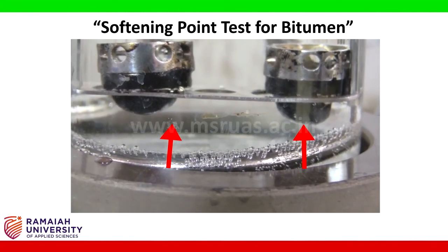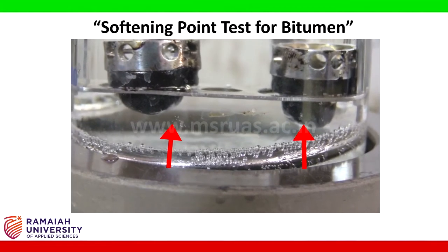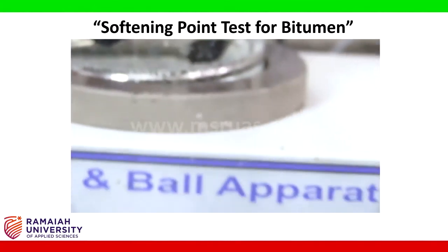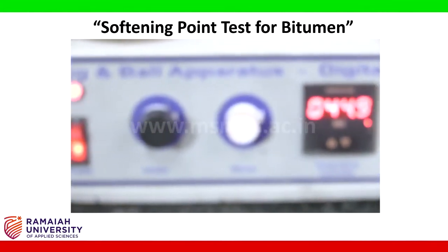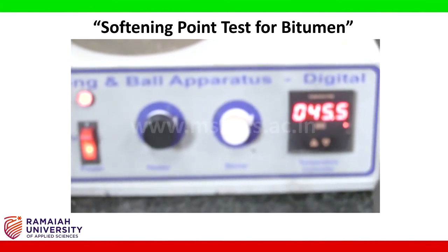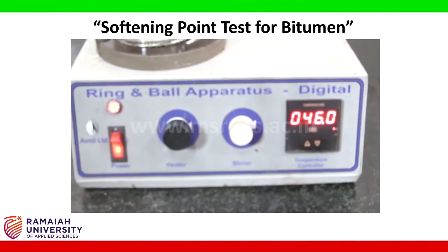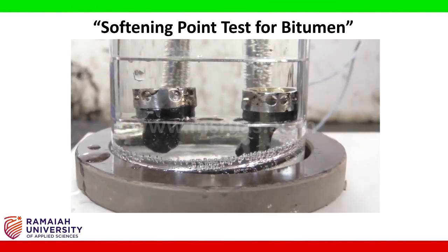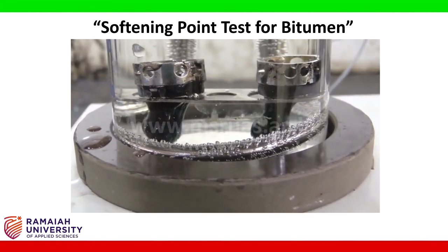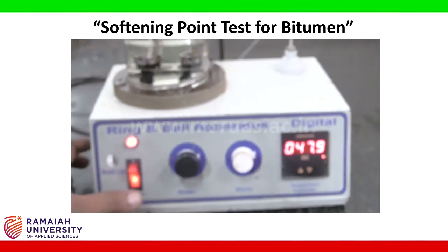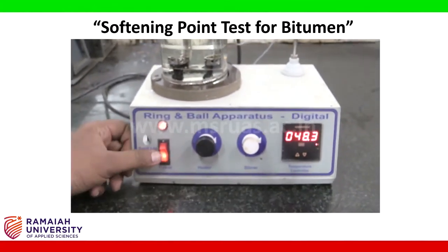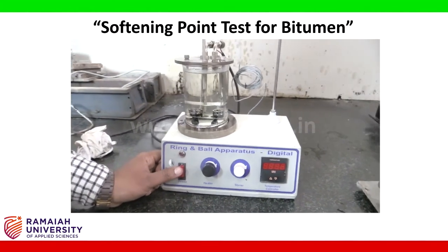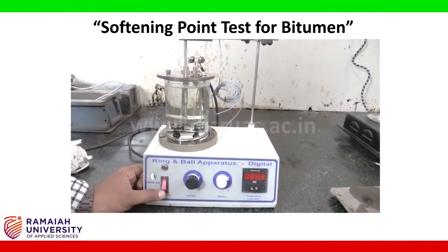Observing the setup, the right ring is going to have a failure now. Yes, the right failed - note the temperature of failure, it is 44 degrees Celsius. The left will also fail shortly. When it touches the base, record the reading - it is 47 degrees Celsius. Take the average of both temperatures: the average temperature gives you the softening point of the bitumen. This completes the softening point test.